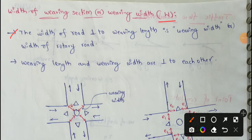The width of road perpendicular to weaving length is called weaving width or width of rotary road. Second point: weaving length and weaving width are perpendicular to each other.